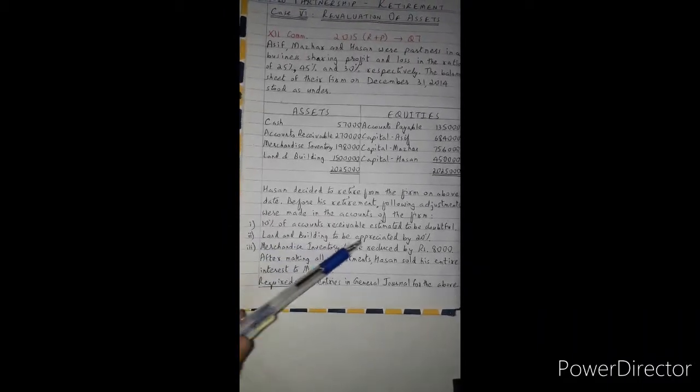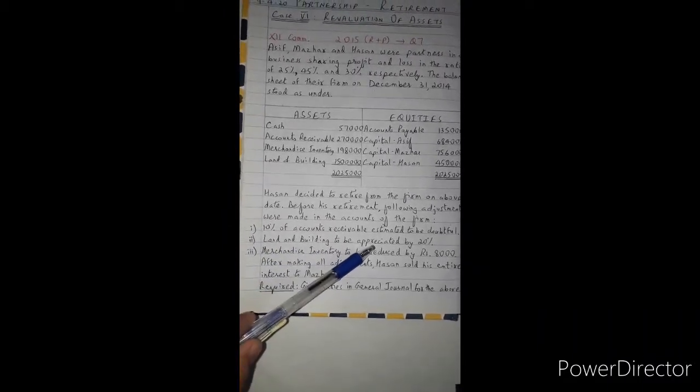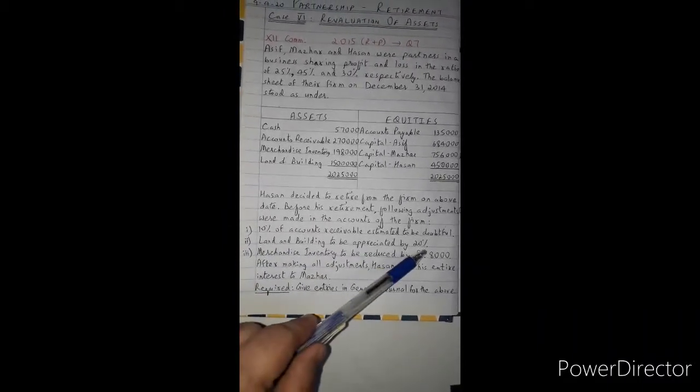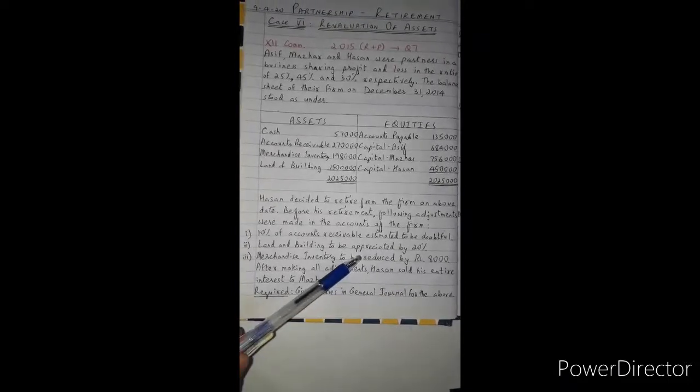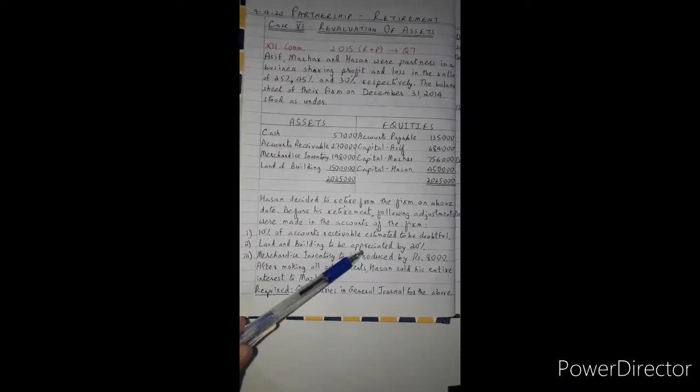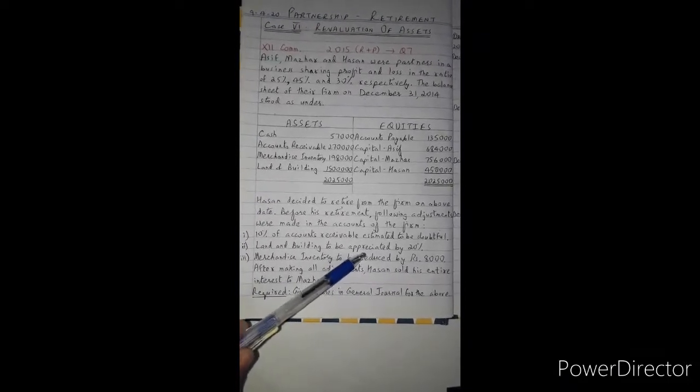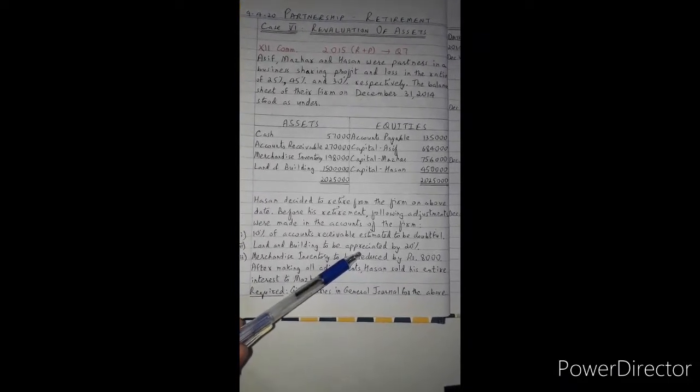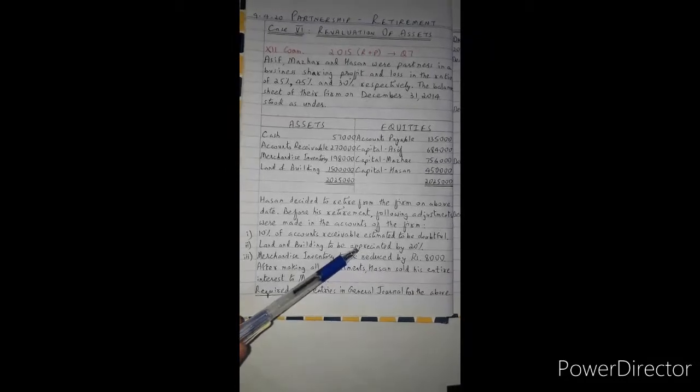The second adjustment: land and building to be appreciated by 20%. Students, note that it says appreciated — not depreciated. The value of the asset is going up. Land and building is increasing in value by 20%.